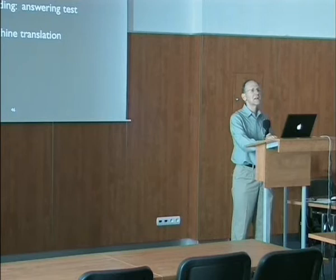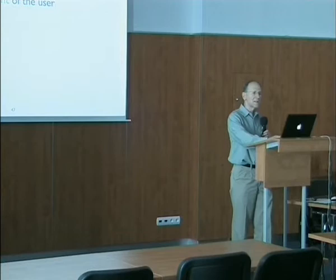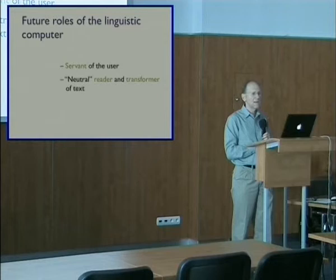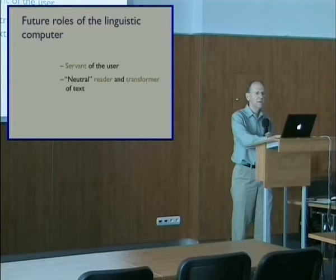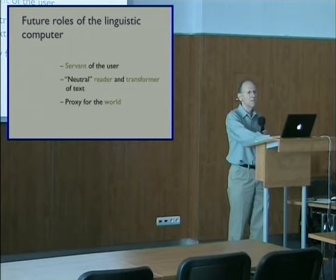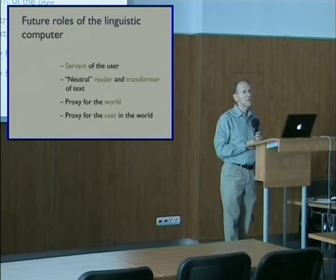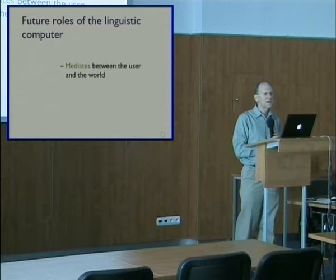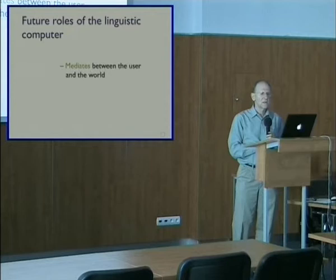So, we see the roles of the linguistic computer of the future. It's still a servant of the user rather than an independent agent, and it's still a neutral transformer of text — those are very useful roles and they're not going to go away. But in addition, we have new roles: the computer will now act as a proxy for the world, interpreting the world and bringing it to the user; and conversely, it will act as a proxy for the user, going out into the world on his or her behalf. In other words, the linguistic computer acts as a kind of mediator between the computer user and the world — it interprets the world to the user, and it interprets the user to the world.